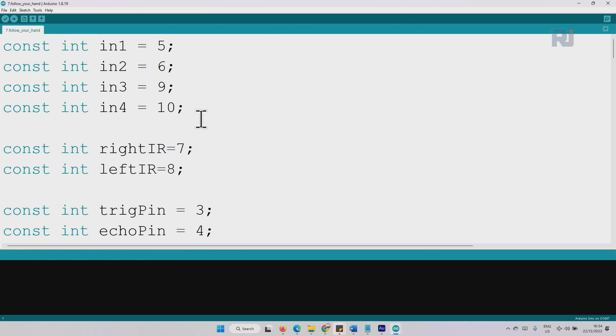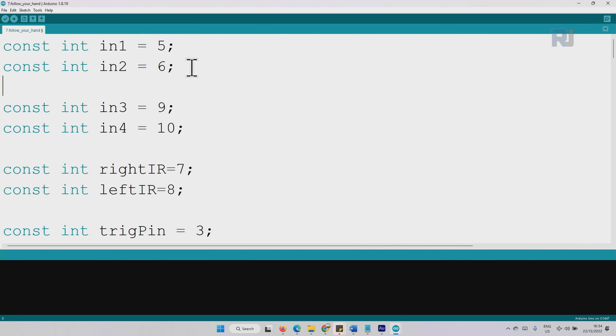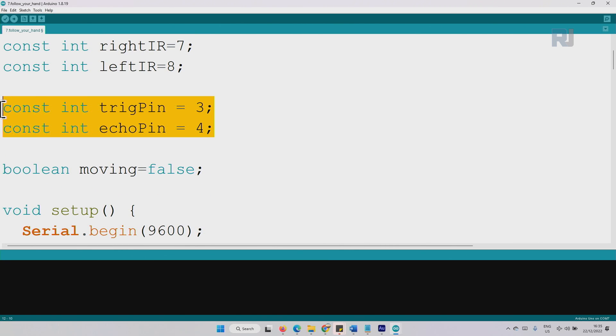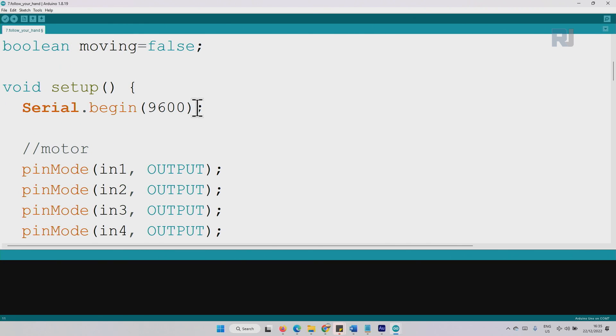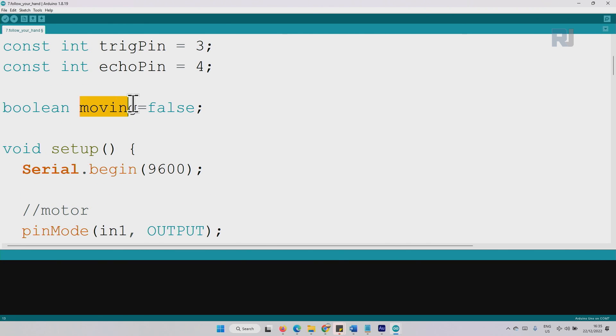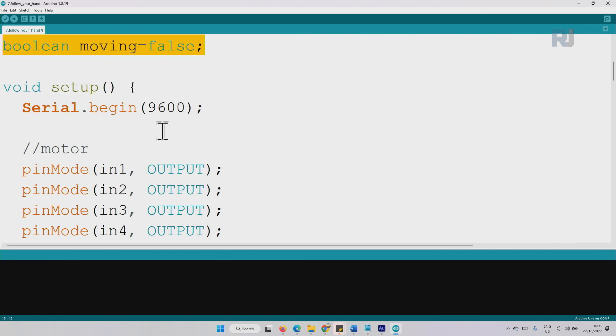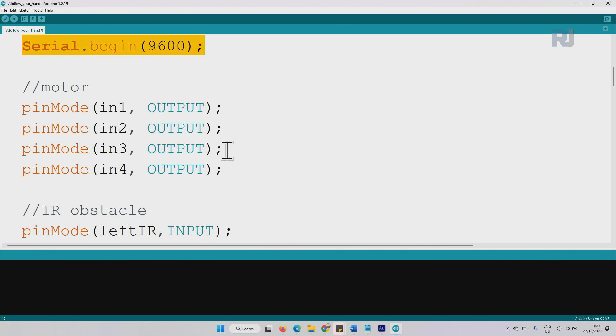Here is the code. Let me explain it. This is the same exactly as before. They define four pins for the car: these two are for one motor, these are for the other motor. These two are for left and right infrared sensor, these are for the ultrasonic ping and trigger. Then I've defined a variable called moving, so initially it's false.